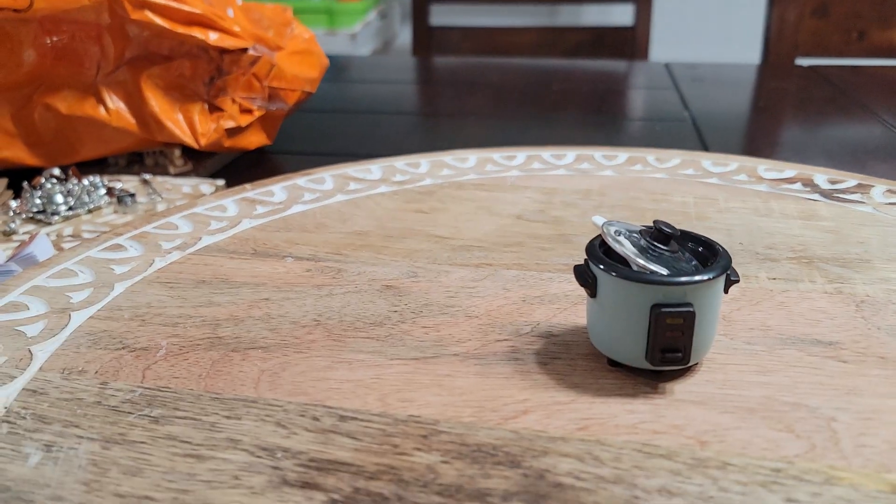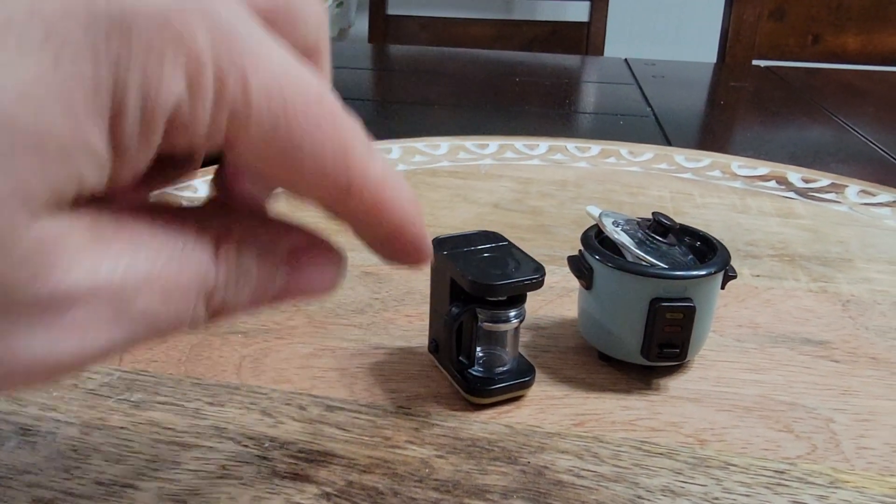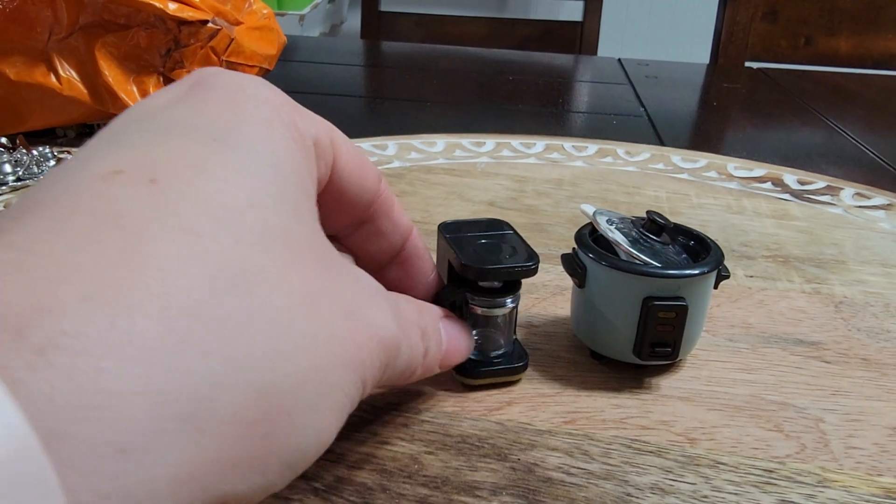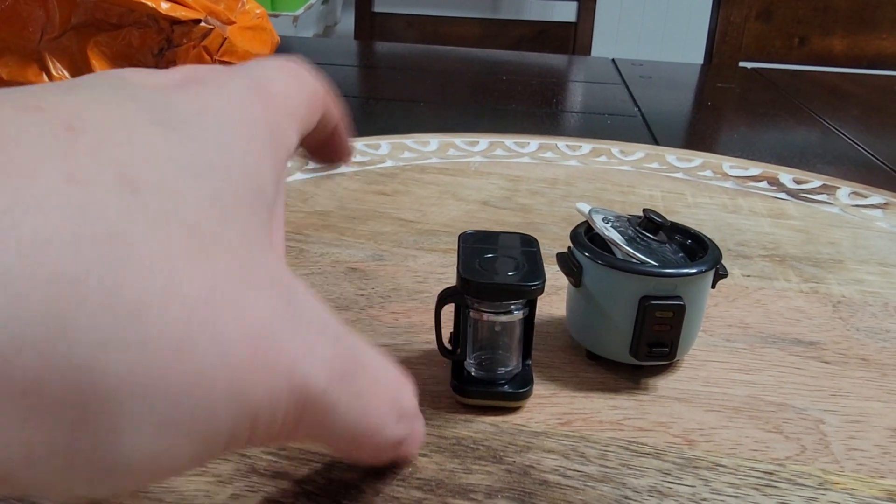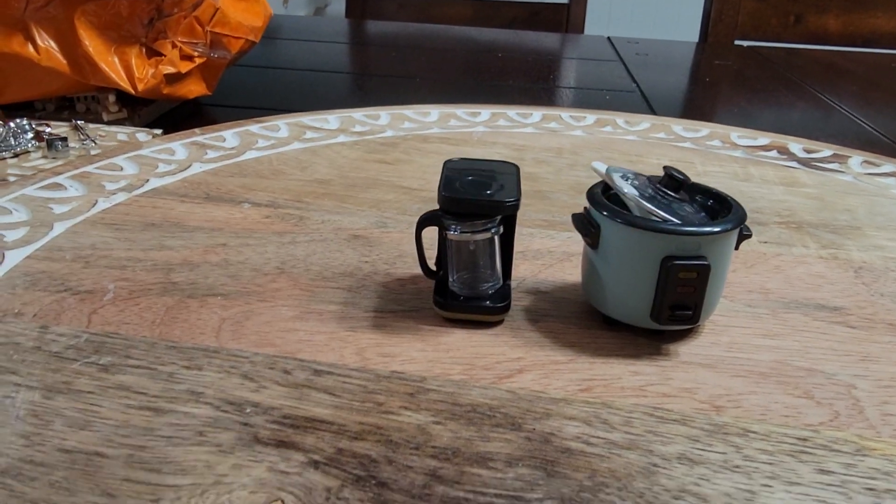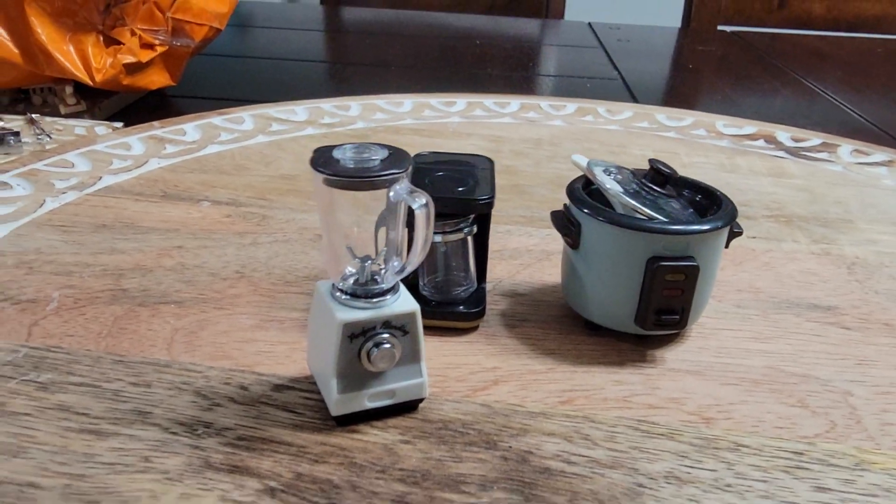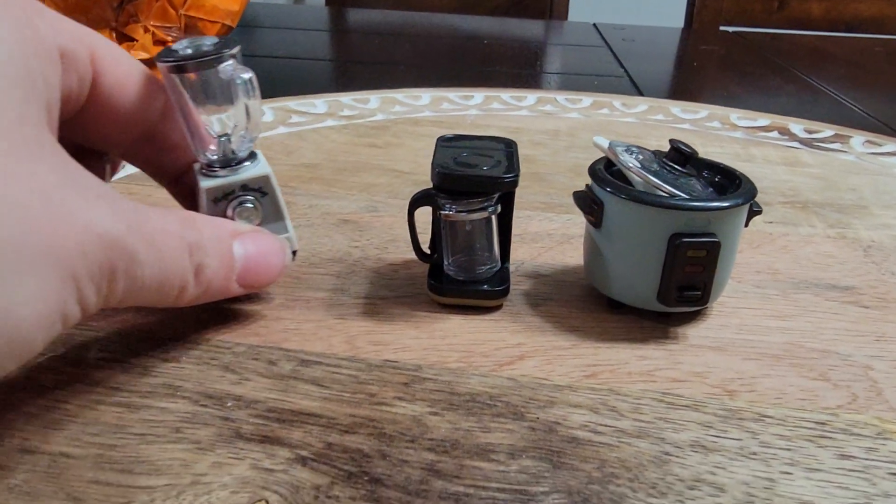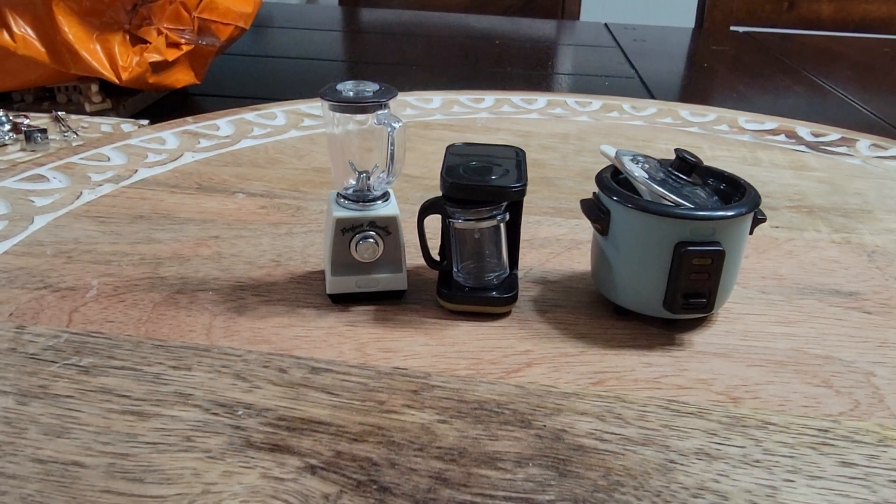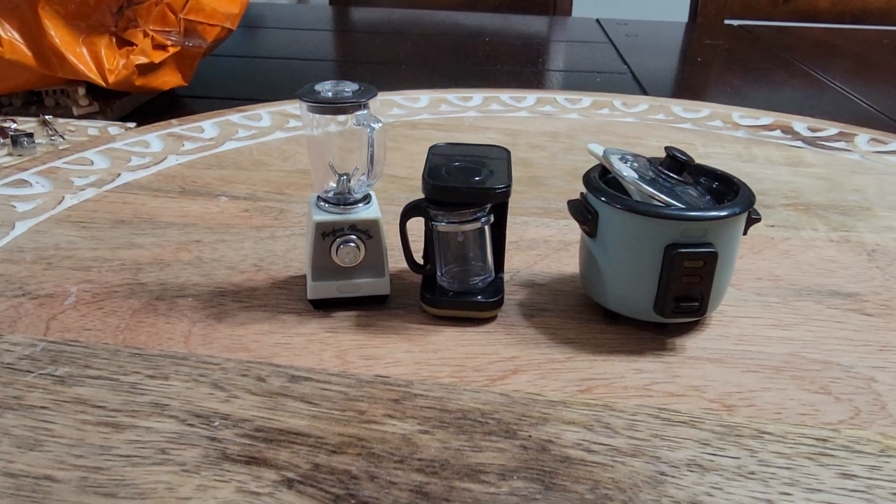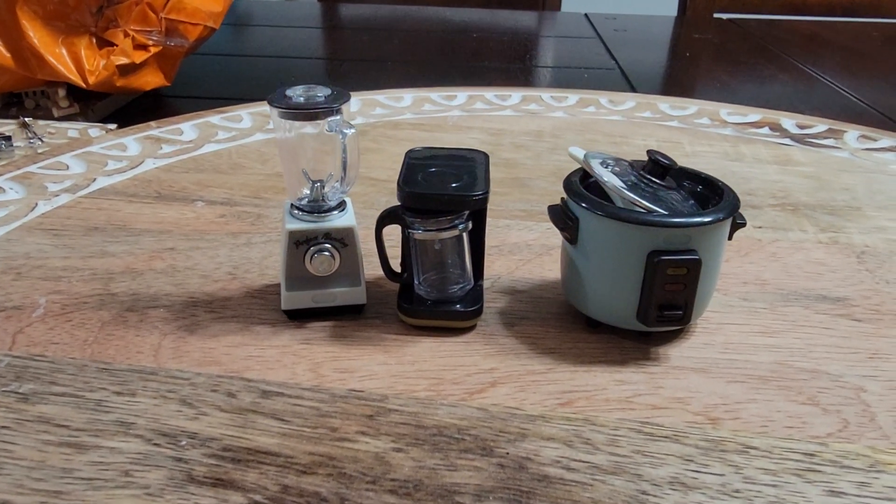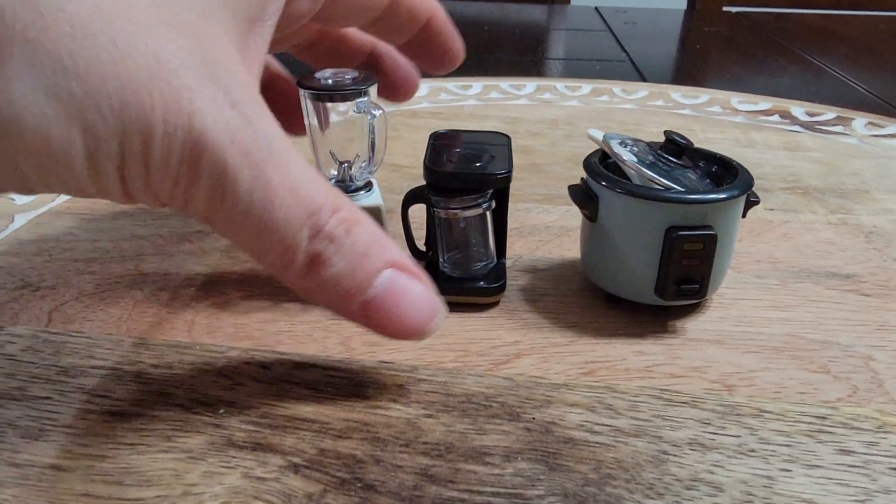In addition to the rice cooker, I got this adorable coffee pot. This comes out. It looks so real. I love it. And this blender. And they all kind of go together. Each item was $2 or less. It's interesting because I saw these same items on Etsy for a lot more. Alright, so these are a win.